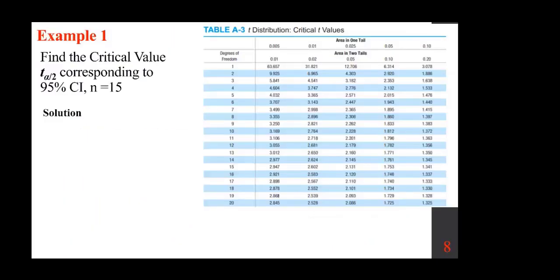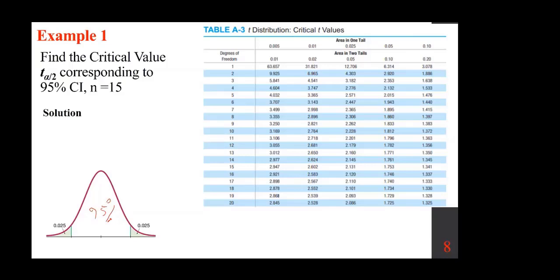To find the critical value for a 95% confidence interval with n = 15: draw the distribution. Each tail has 5% / 2 = 0.025. The degrees of freedom is n − 1 = 14. In the t-table, look up df = 14 and the column for area in one tail = 0.025 (two tails = 0.05). The answer is plus or minus 2.145.